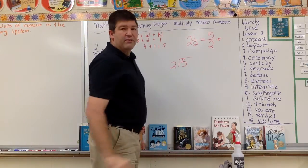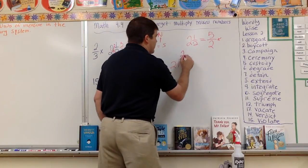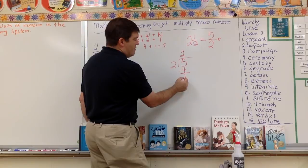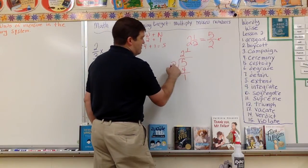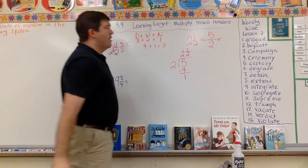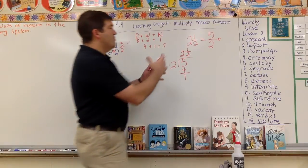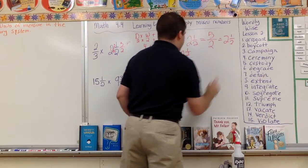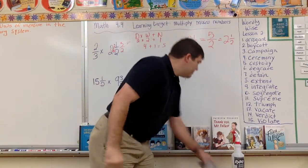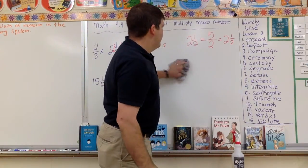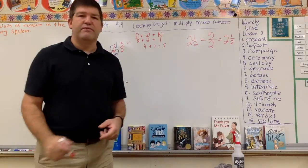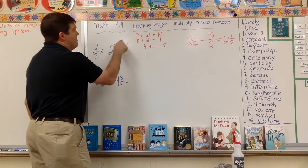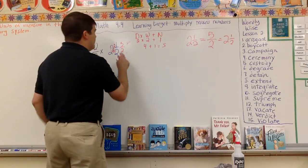How many times does two go into five? Two times. Two times two is four. Subtract that out, I get one. So then I have one. This is my denominator. Two and a half. So it goes both ways. That's how you get a mixed number into a fraction. Two times two plus one equals five over two.